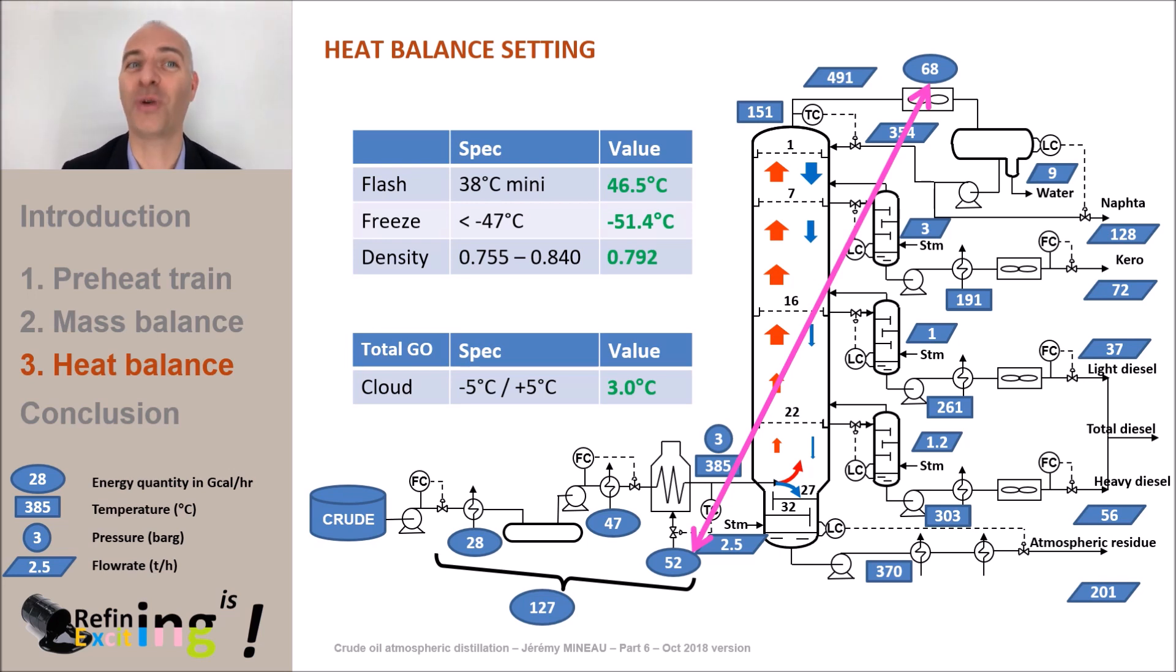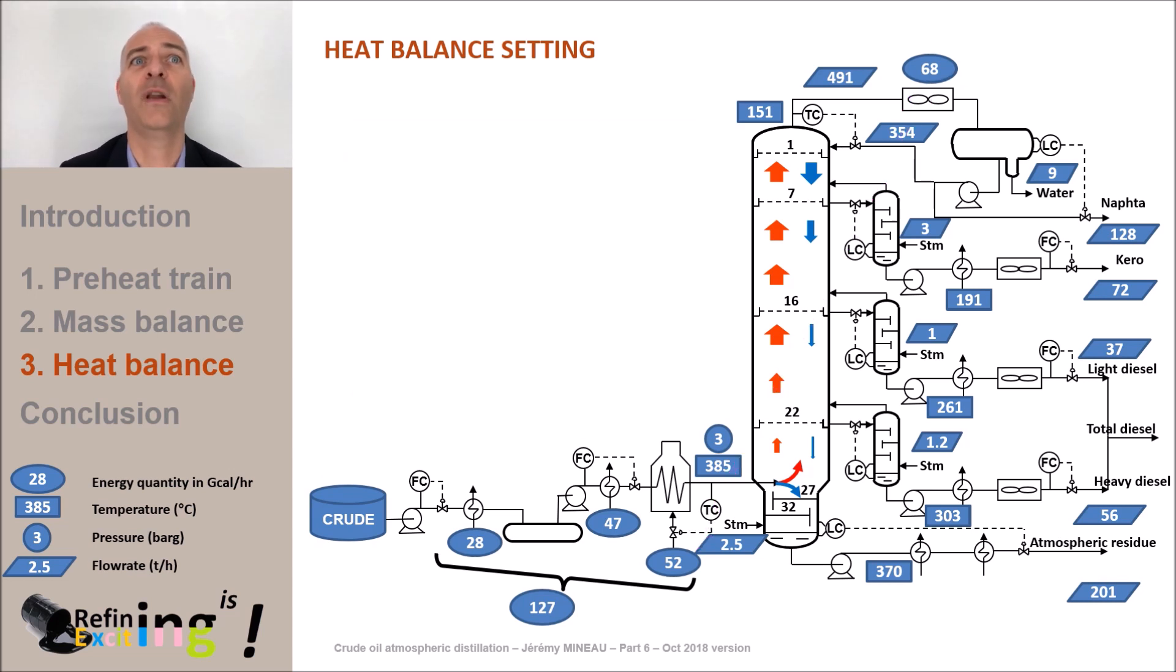So, how to recover these calories? Part of these calories will be recovered by the installation of one or more pump-arounds. A pump-around consists in withdrawing liquid from the distillation column, then cooling it down and re-injecting it colder up in the column. The interest is two-fold.